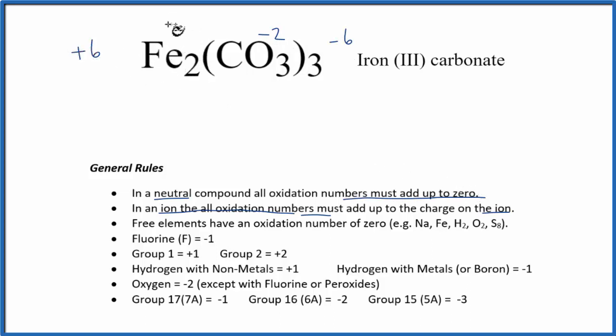Two times something gives us positive 6. Two times positive 3 gives us plus 6. So the oxidation number on the iron is plus 3.